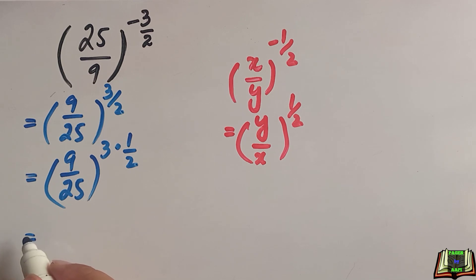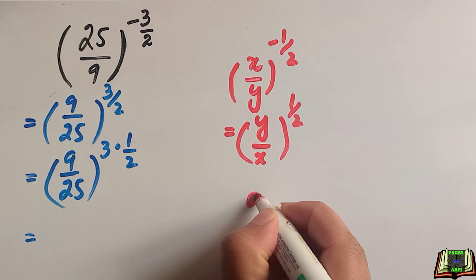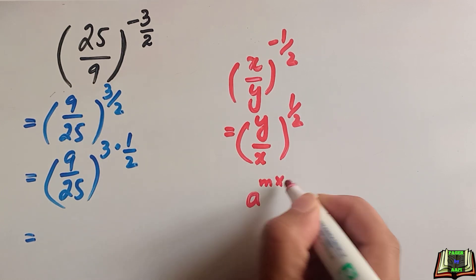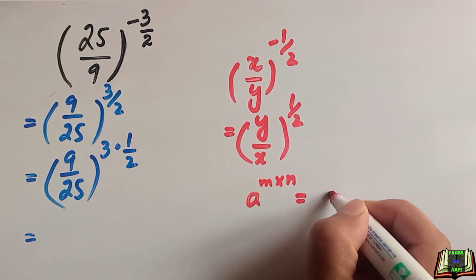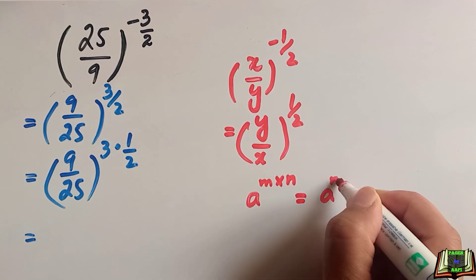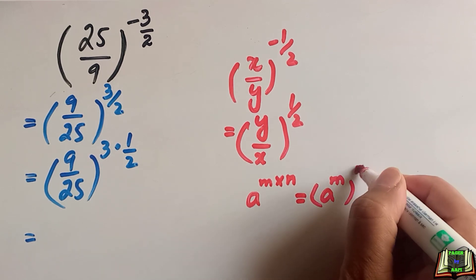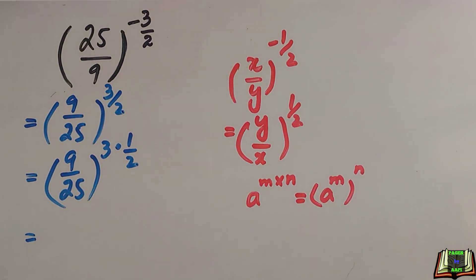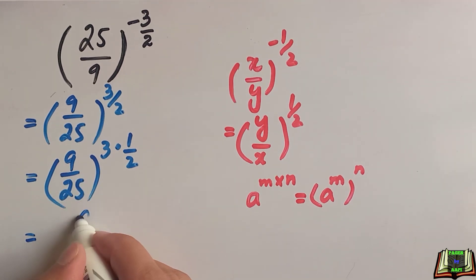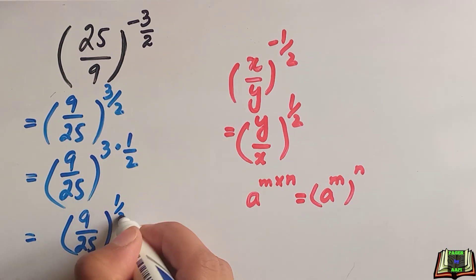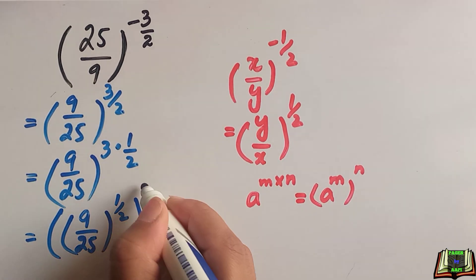Now we are going to use a law of exponent. That law of exponent says if a to the power m times n then this is equal to a to the power m whole power n. So using that law of exponent we can write our expression as 9 over 25 to the power 1 over 2 and whole power 3.